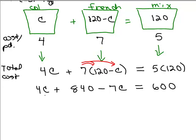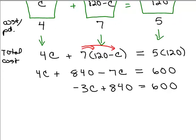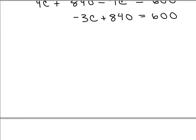So if I combine like terms over here on the left, I have 4C minus 7C, that's going to be negative 3C plus 840 equals 600. Now you can go ahead and put the video on pause and finish solving this on your own by the way.